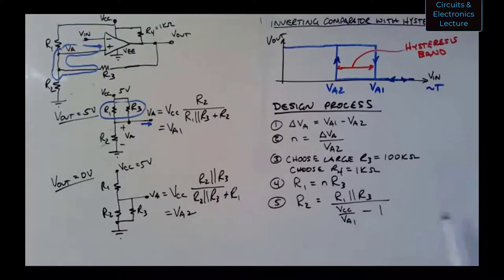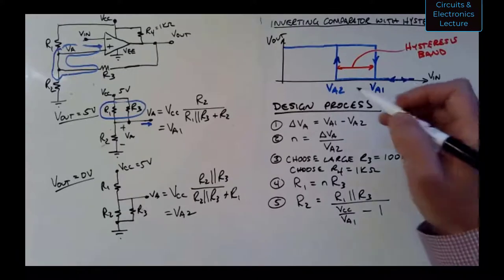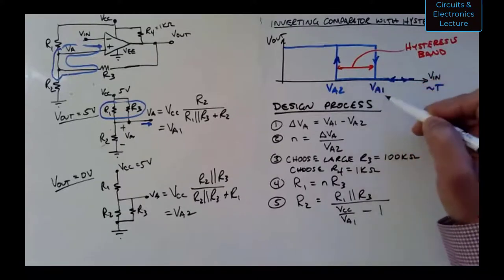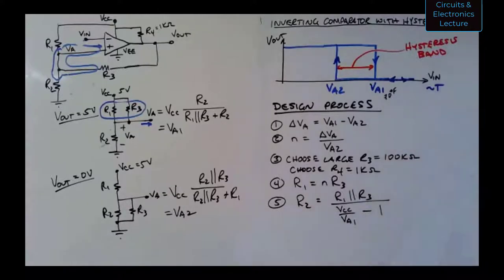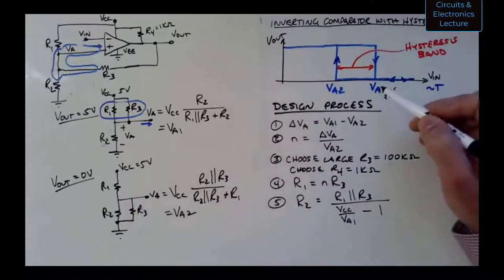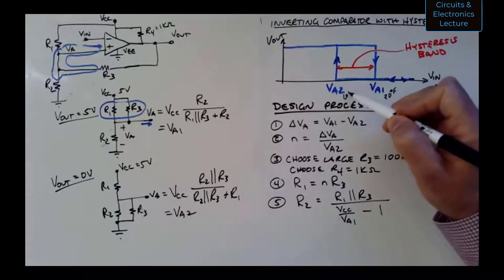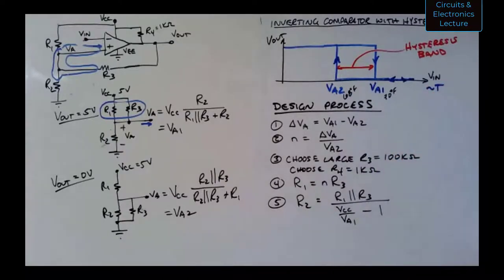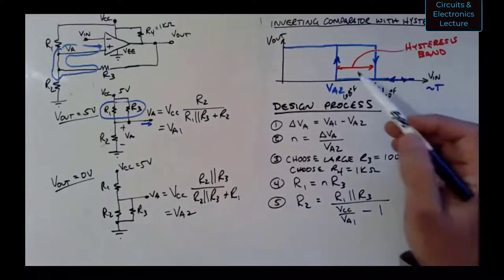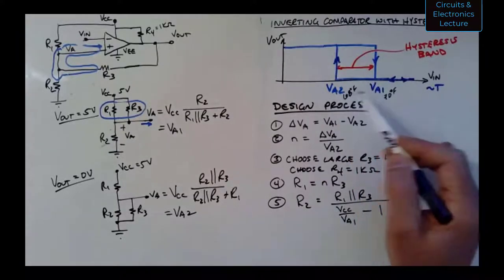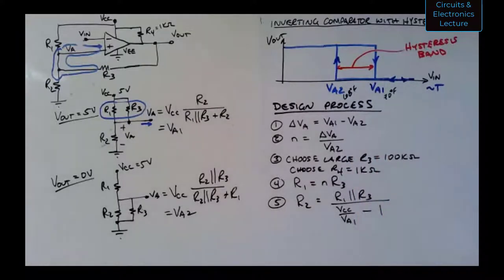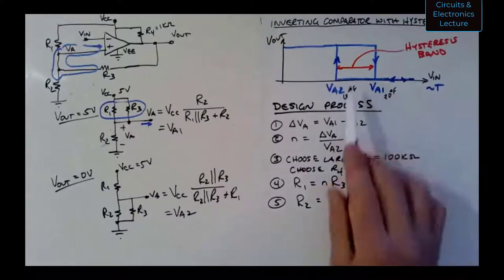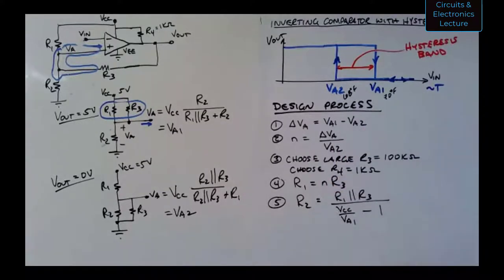With this design process, you could actually build a thermostat. If you knew what voltage corresponded to 70°F and 68°F from a temperature sensor, you could build a comparator circuit that turns a heater on and off to hold the temperature between those two values. We'll get to sensors later in the course.